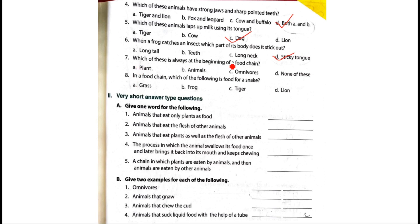Which of these is always at the beginning of a food chain? Plant, animals, omnivores, none of these. The answer is plant.